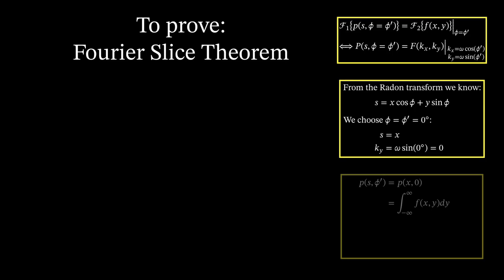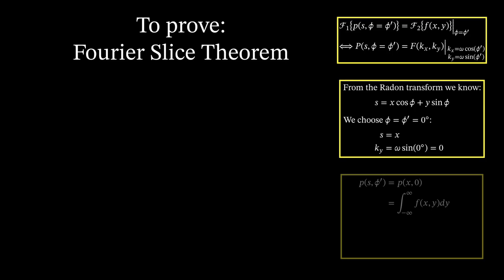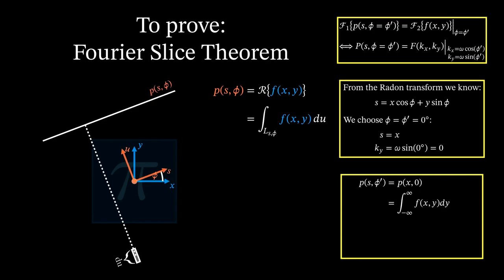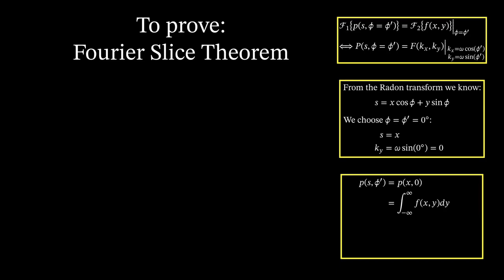For our projection, that means that we can simply integrate f of x and y over dy. Looking back on the Radon transform, we see that for our angle of zero degrees, u is equal to y. So du becomes dy. As well, we see that s is indeed equal to x.